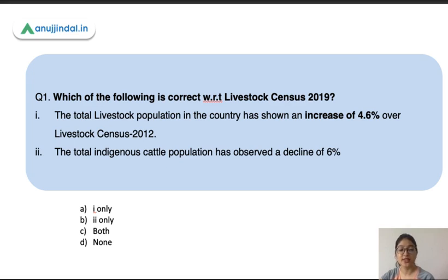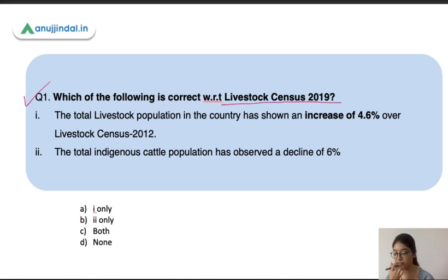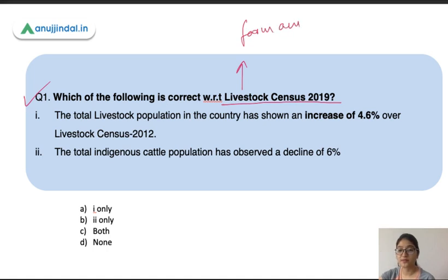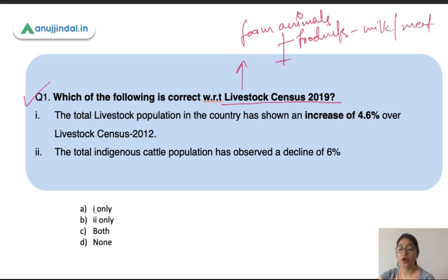Let's start our session. The first question is: which of the following is correct with respect to Livestock Census 2019? In today's session we'll be discussing about the Livestock Census — a very important topic. In the previous session we were discussing about the Agriculture Census, and I mentioned that these censuses are very important and you will get two to three questions from these areas. Livestock are the farm animals which are raised either for their products, for example milk or meat.